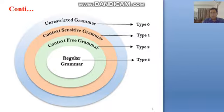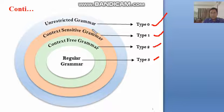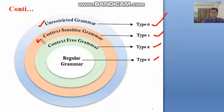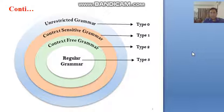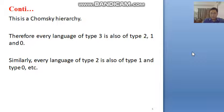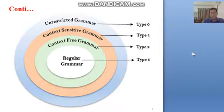We can see in this diagram — Type 0, Type 1, Type 2, and Type 3 are shown as concentric circles. The outermost circle is unrestricted grammar (Type 0), which is the largest set. Type 1 is a subset of Type 0, then context free grammar, then regular grammar — the smallest set. This hierarchy is called Chomsky Hierarchy.